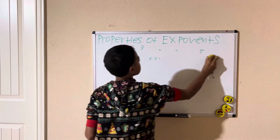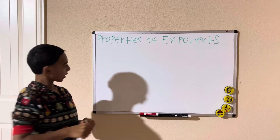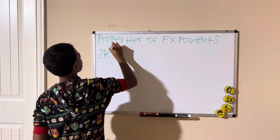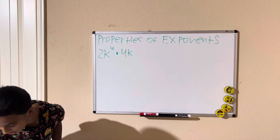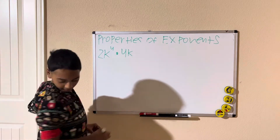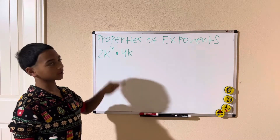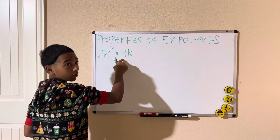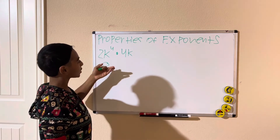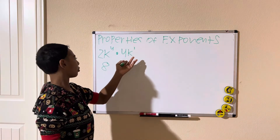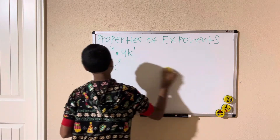Let's try another example. We have 2k to the fourth times 4k. Same idea: 2 times 4 is 8. Then k to the fourth times k — if there's no exponent shown, it's just k to the first — so we add the exponents: 4 plus 1 is 5. The answer is 8k to the fifth.